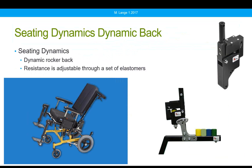Seating Dynamics also has a dynamic back. It has an adjustable level of resistance — it comes with four different polymers, and depending on the polymer chosen, more or less resistance is provided. The client extends, and the energy built up in the polymer assists the client to return to upright. It locks out to prevent any movement if required. Having a variety of resistances is important because clients with very strong extensor tone may require quite firm resistance, while clients seeking vestibular input might need a much softer polymer.